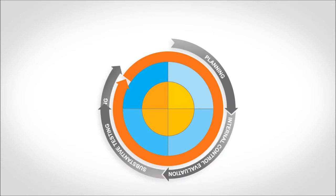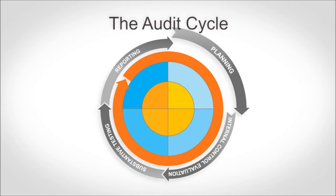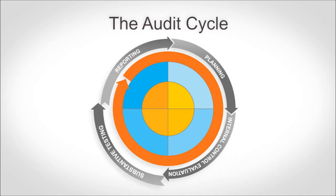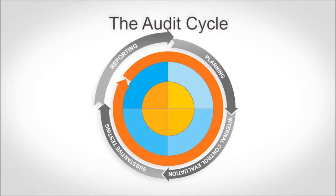The purpose of this video is to explain the annual audit cycle so that DLA can better prepare to respond to the responsibilities and deliverables required to successfully complete the audit. The annual audit cycle includes four phases: 1. Planning, 2. Internal Control Evaluation, 3. Substantive Testing, and 4. Reporting.